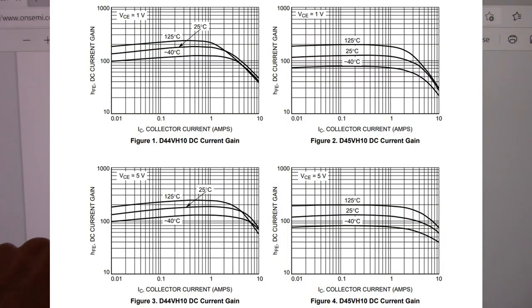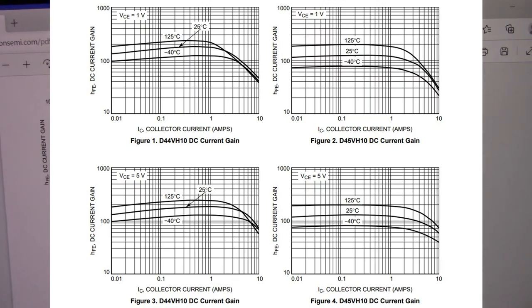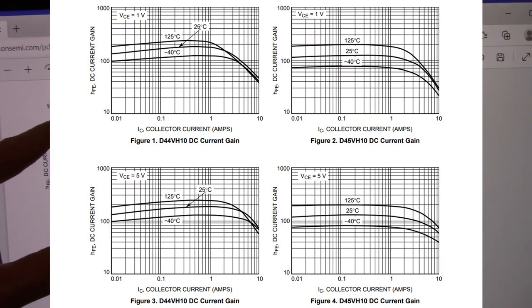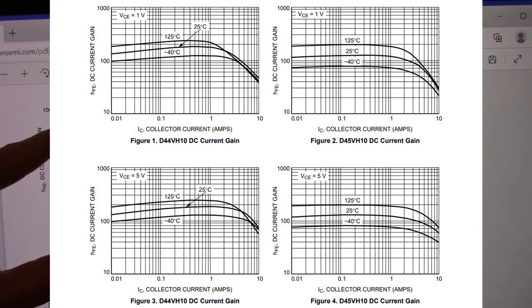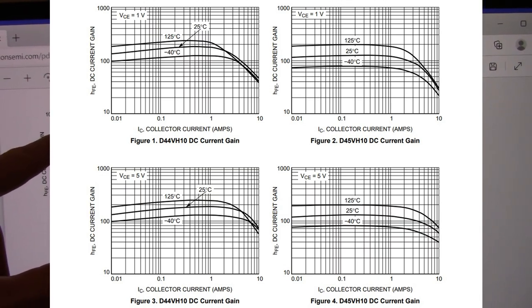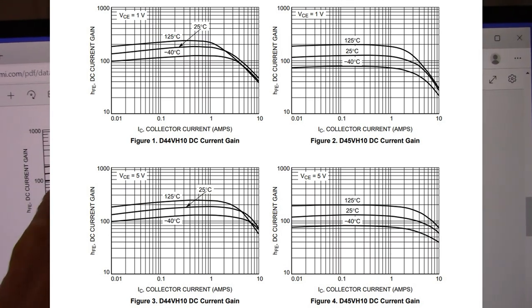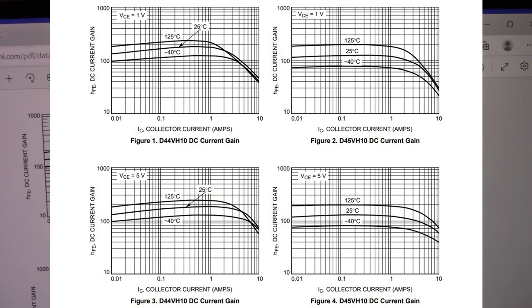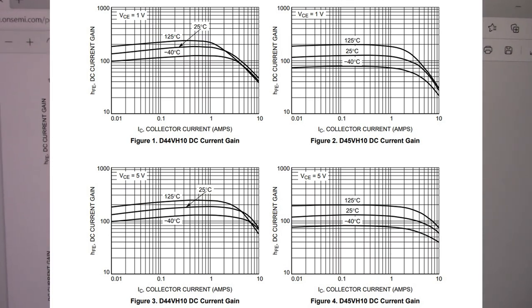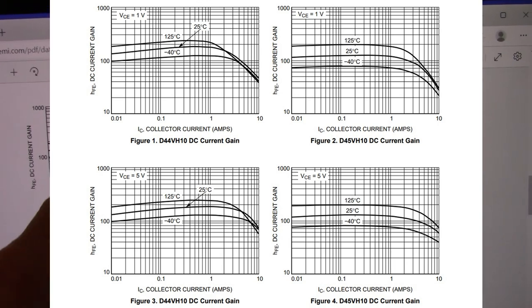So what I like to do is see where the gain is at around 3 amps. That's probably where I would use these transistors. You also look at the voltage they're testing at. They have a VCE of 1 on the upper graphs and 5 on the lower set of graphs. And look how high it is. Over 100 at the 3 amp line.